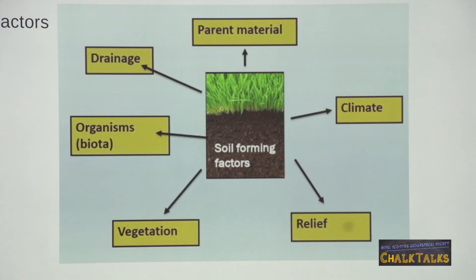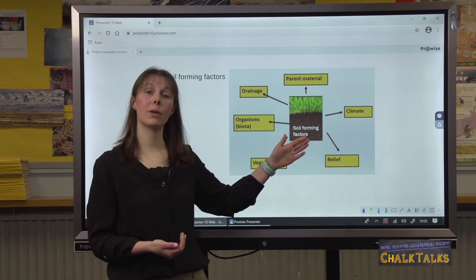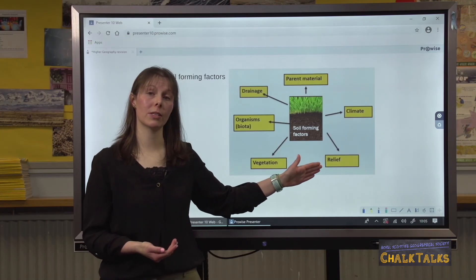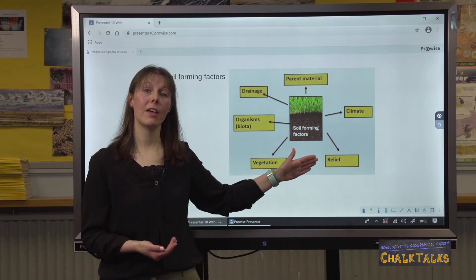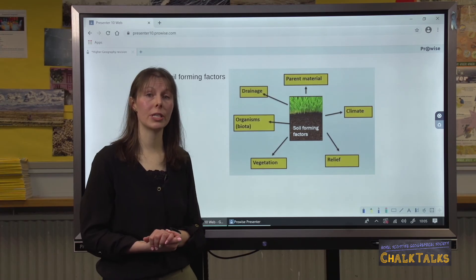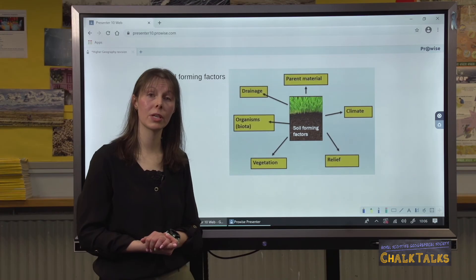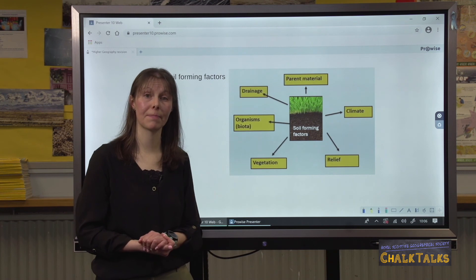The final factor to consider is relief, which refers to the slope of the land. If the soil is forming on flatland, it has the opportunity to build up into a nice thick soil. If soil is forming on steep slopes, it is often thin due to water running off and it not getting the nutrients it needs.